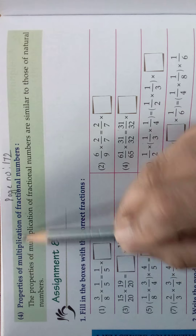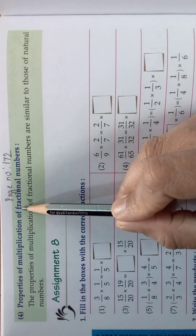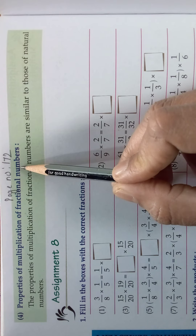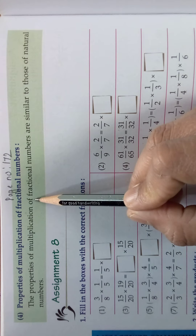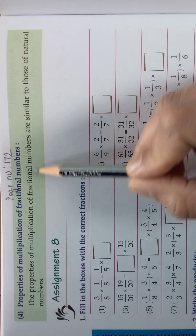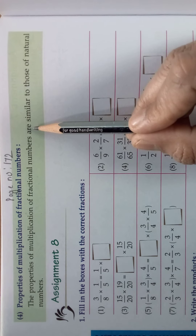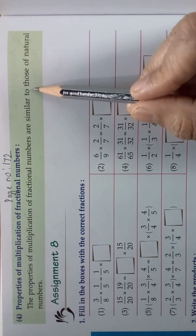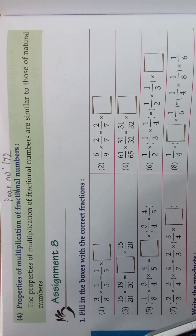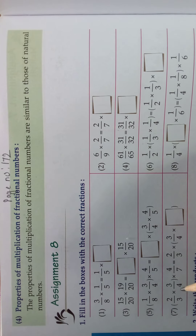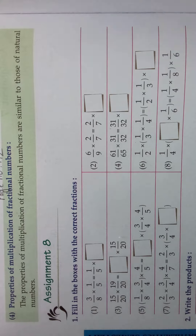These properties are the same for natural numbers as well as fractional numbers. The properties of multiplication of fractional numbers are similar to those of natural numbers. We will see all the properties by doing the sums.